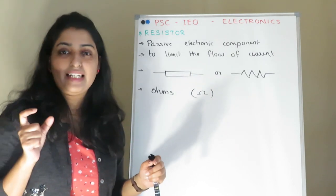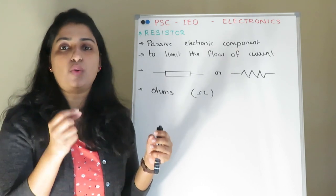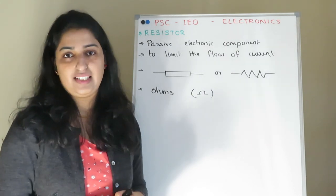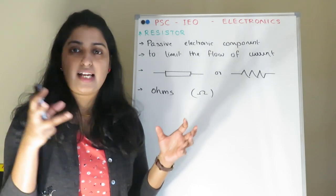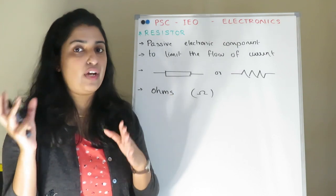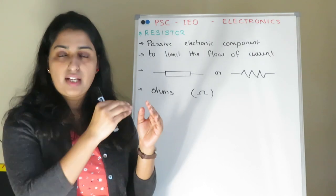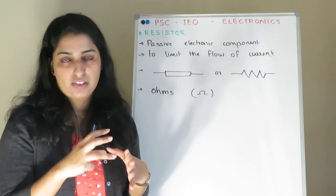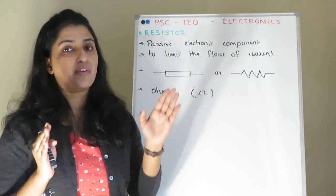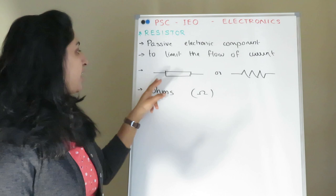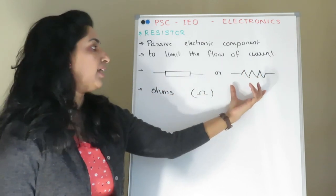Current in a circuit flows through resistive material. What is current? It is a flow of electrons — the electron flow is the current. This resistor is used to limit the flow of current in a circuit.